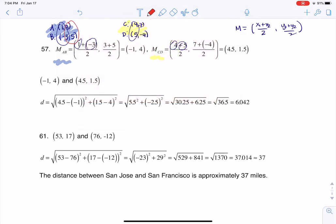We'll go to red. 3 and 5 for my y's, 7 and negative 4 for my y's. So I'm averaging them, and ultimately I get these two points.